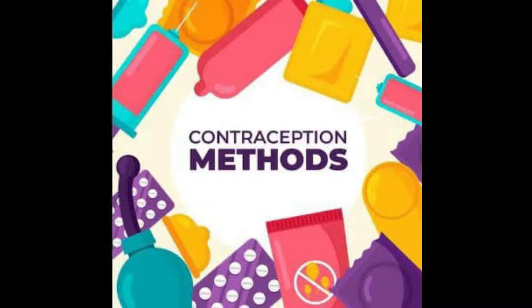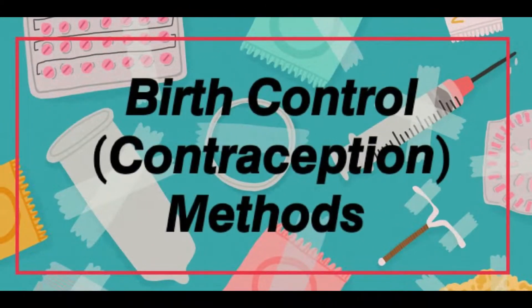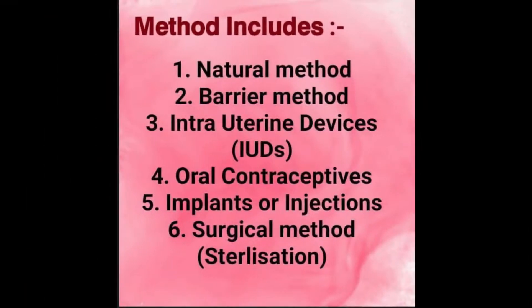Let's start with a very important topic: birth control and contraception methods. Contraception methods बहुत ज़्यादा ideal होते हैं, user-friendly होते हैं, easily available होते हैं, और इनमें कम side effects भी होते हैं। The six methods are: natural method, barrier method, intrauterine devices (IUDs), oral contraceptives, implants and injections, and surgical method or sterilization.